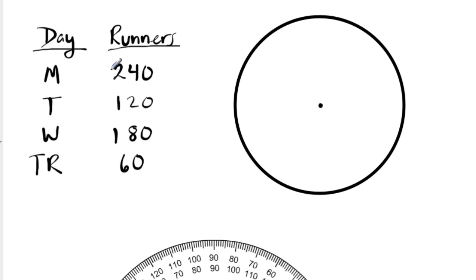The first thing I would do is add up all of the runners over all the days because I want to figure out what fraction of runners run on each day. And that fraction will allow me to turn this into degrees. So the first thing I want to do is add up these numbers. What do we get? Well here, I'm just going to skip around and add.